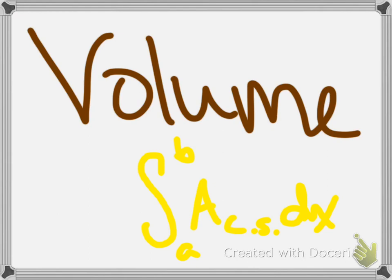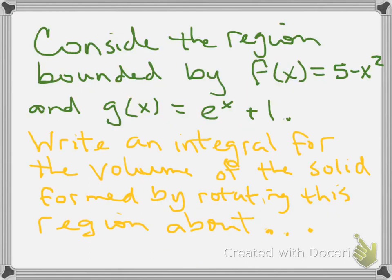So let's get right into the situation and see what's going on here. We're going to do this several different ways, several different examples. Consider the region bounded by f(x) equals the parabola 5 minus x squared, and g(x) equals the exponential e to the x plus 1.